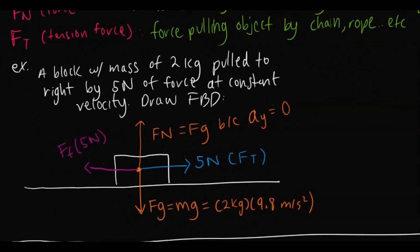Here's a simple example: a block with a mass of 2 kilograms is pulled to the right by 5 newtons of force at a constant velocity, and you want to draw the free body diagram. You draw arrows from the center of the mass. It's pulled to the right by 5 newtons. Because it's moving at constant velocity, the force of friction must oppose it in the x-direction at 5 newtons as well. Since it's not accelerating in the y-direction, the force normal equals Fg.